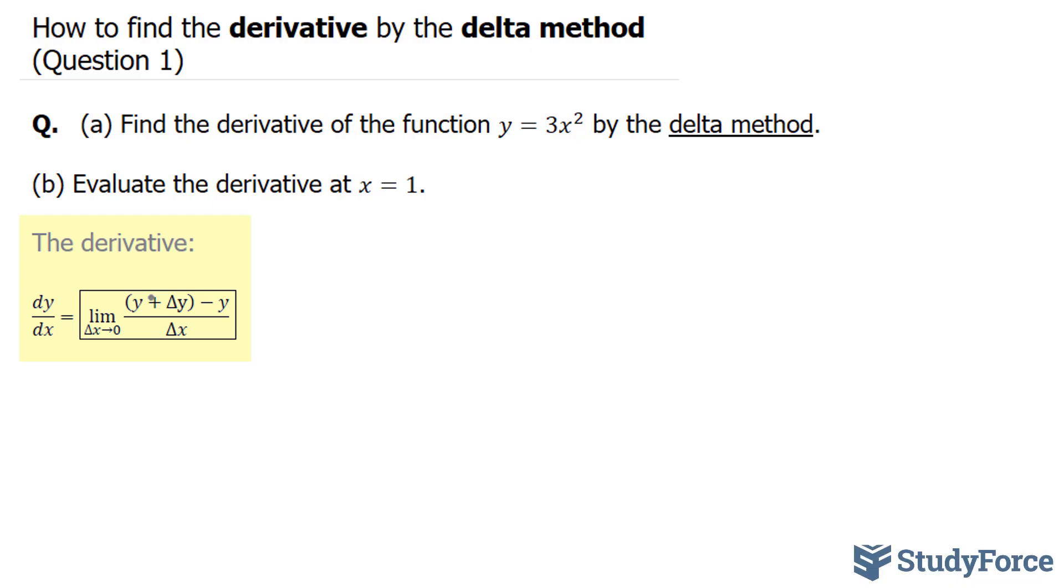y plus delta y minus y over delta x. Now, you're probably not used to seeing it in this particular notation. You're probably used to seeing it like this, where we have the limit of delta x goes to 0 for f at x plus delta x minus f at x over delta x.